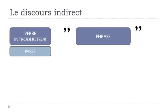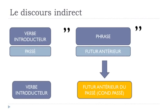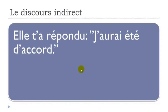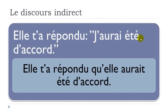If the second part has the futur antérieur, it becomes the futur antérieur du passé — technically the conditionnel passé. Example: elle t'a répondu, j'aurai été d'accord. The futur antérieur j'aurai été changes to: elle t'a répondu qu'elle aurait été d'accord. That is the conditionnel passé form.